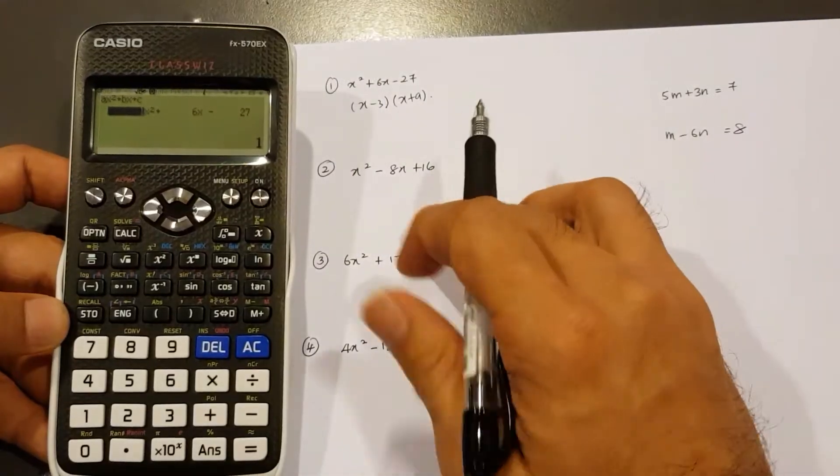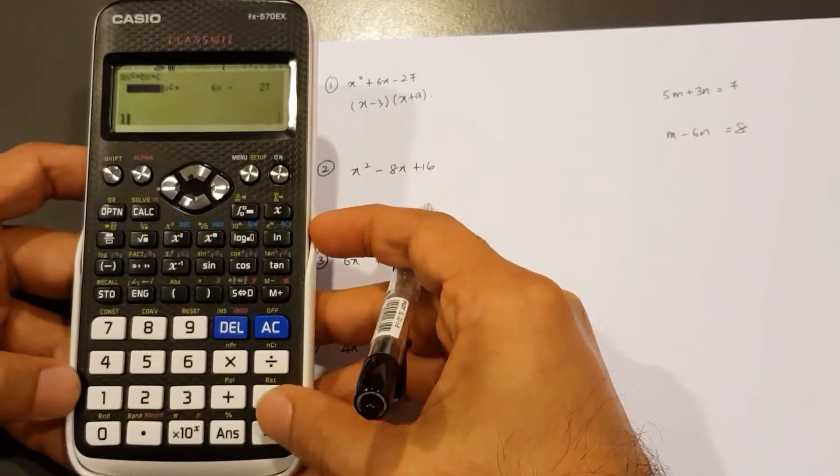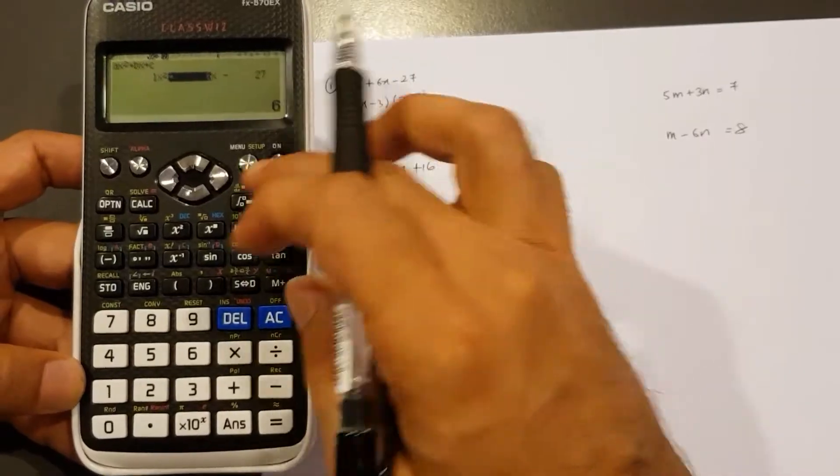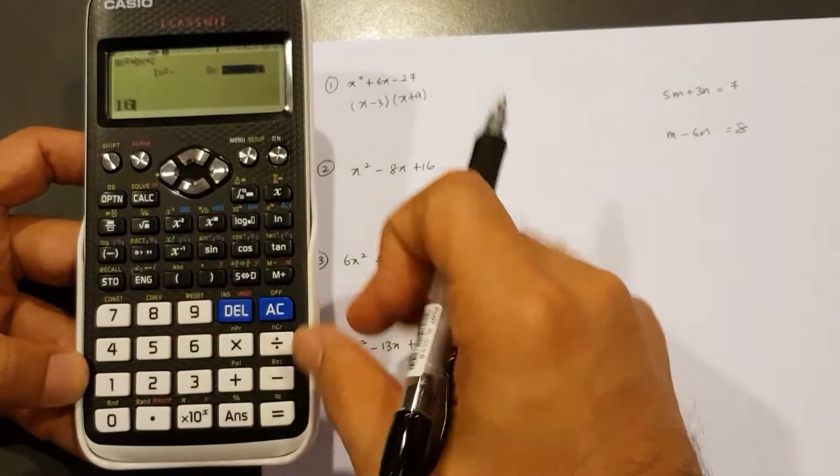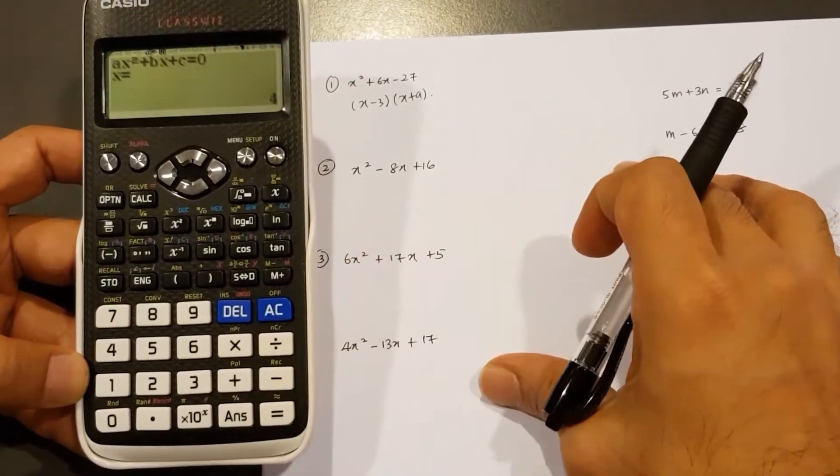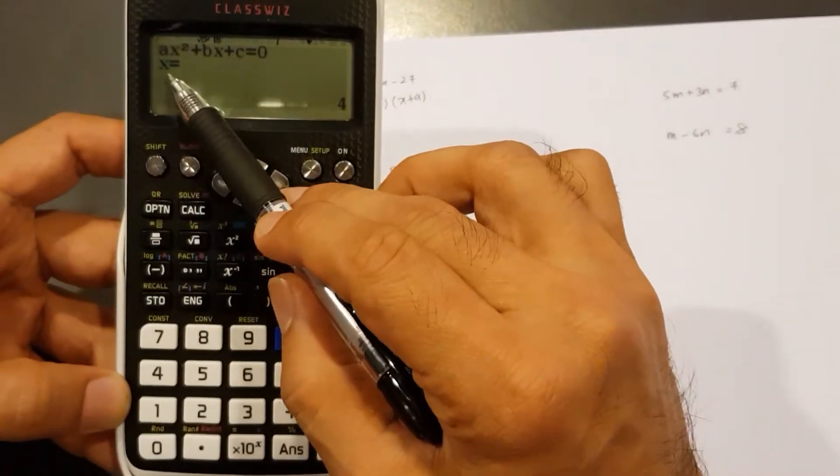All right. So now I type AC again for the second question. A is one. So one equal B is negative eight. So negative eight equal C 16. So one six and then equal. Okay. Equal one more time. I get four, but this time there's only x.